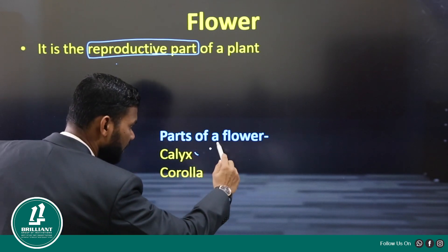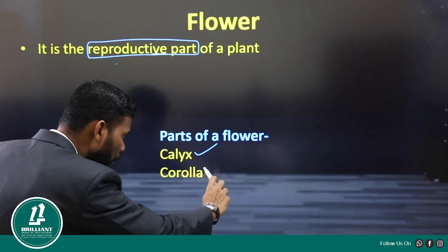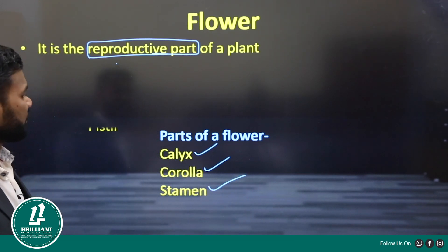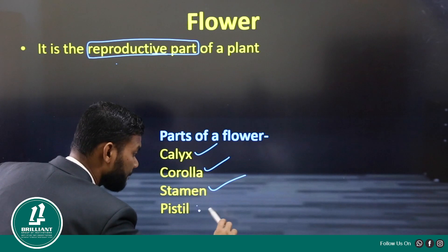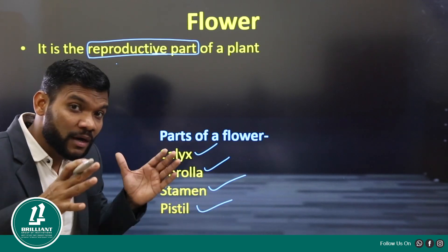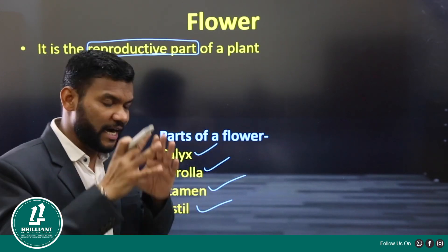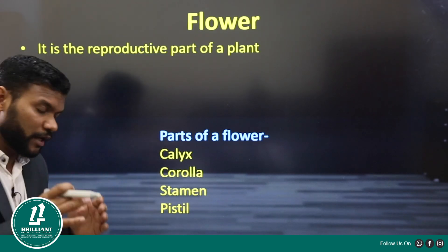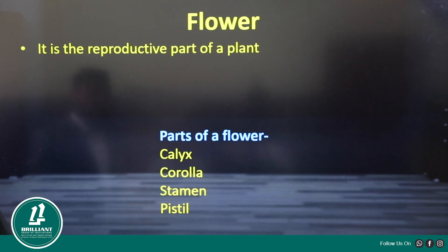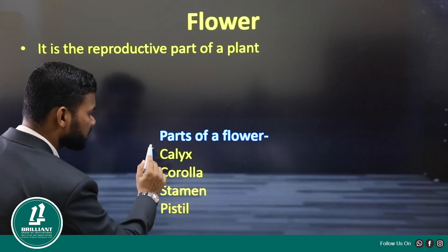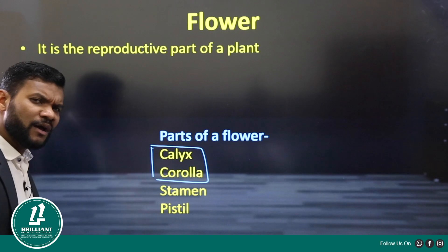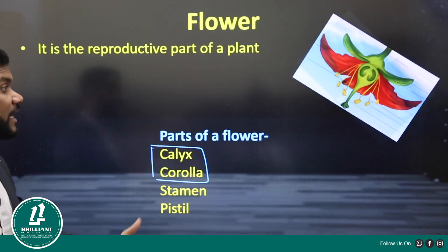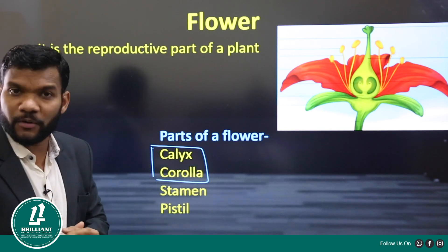The first part is the calyx, the second one is the corolla, the third part is the stamen, and the fourth one is the pistil. These are the parts we are going to study. Now, calyx and corolla are the two different parts which are not taking part in reproduction.